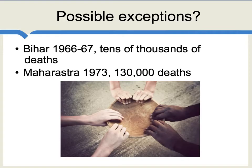Is Sen completely correct? What do his critics say? Well, they point to the Indian state of Bihar, which in the mid-1960s had tens of thousands of deaths. Another example given is Maharashtra, which in the 70s had 130,000 or so deaths. Both of these events came under democratic India. The debate then gets to what really is a famine — how many people have to die before we call it a famine? It seems that Sen may have somewhat exaggerated his initial hypothesis, but still, it seems to be more correct than not. Having a democratic government really does significantly decrease the chances of famine in a country.